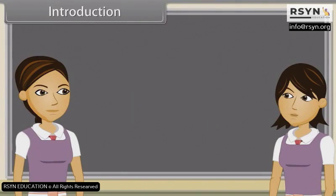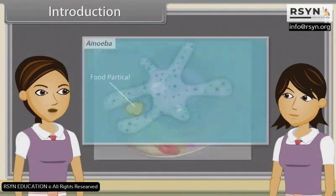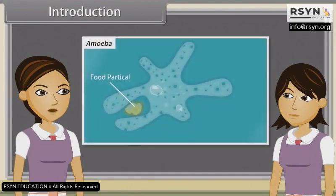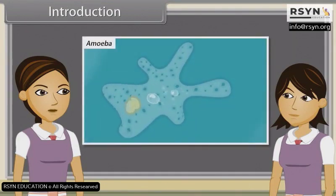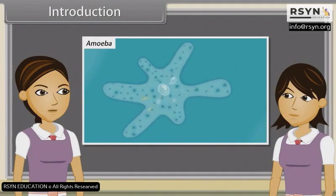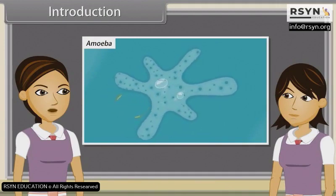Hey Ankita, we know that the cell is the structural and functional unit of life, but do you know what it actually means? It means a single cell can perform all basic functions of life, such as movement, intake of food and respiratory gases, respiration and excretion.